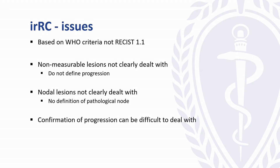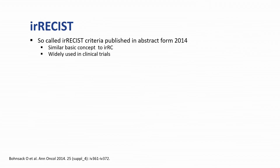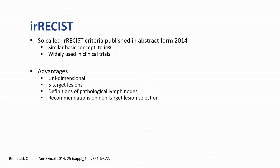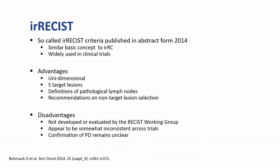This was a really important step forward in response assessment. Several practical issues with irRC ultimately led to two further iterations. The next, which I'm sure you're familiar with, is ioRESIST — published in abstract form about five years ago, similar in basic concept to irRC, and very widely used in clinical trials. Its main advantage is that it was based off of RECIST 1.1, making it practically quite easy to use. Its disadvantages were that it wasn't developed under a formal working group, and in my experience it's relatively inconsistently applied across trials, with some definitions that aren't entirely clear.